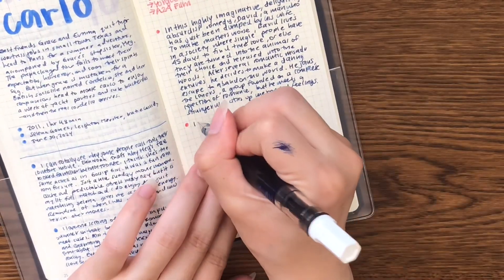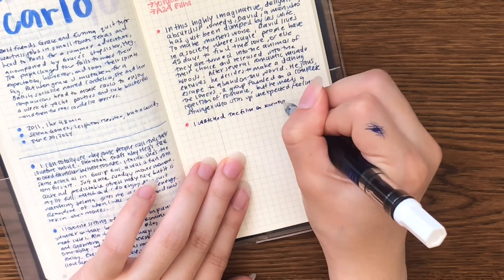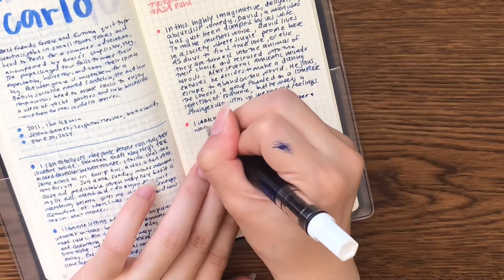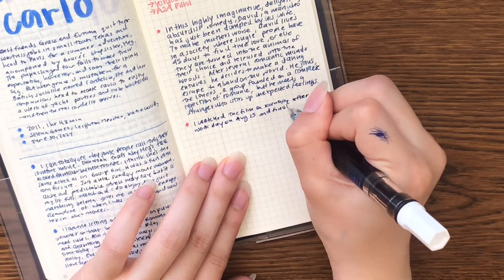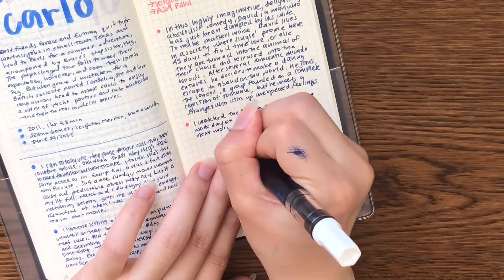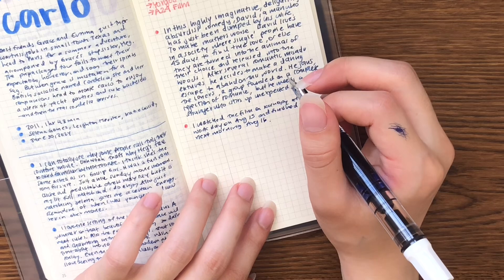I'm writing with my TWSBI Eco fountain pen in extra fine nib, and I really have been liking the Hobonichi Weeks, but I'm not using it as much. Honestly, I am not filling it out. I've been skipping so many weeks and I have so many empty pages. The only thing consistently that I've been using is the back notes pages whenever I have a movie that I want to write about.